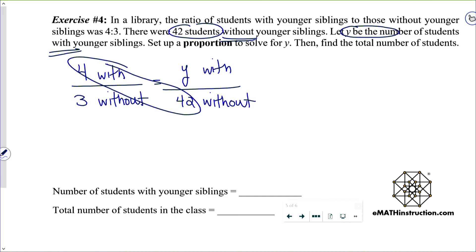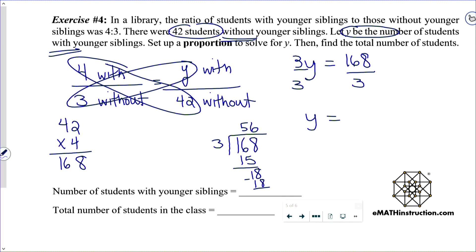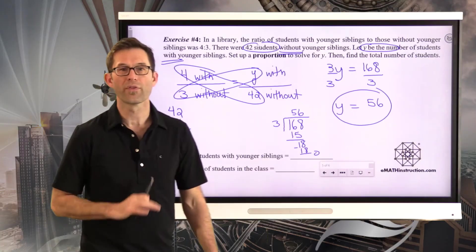So the 42 students that they tell us are without, and the thing that we want to find are the number of students with younger siblings. So what we've got is we've got that 4 to 3, which is really the with to without. Now, we want to keep the Y in the numerator, because we're trying to solve for the number of students with. And we know that there are 42 without. In order to solve this, I'm just going to do a little cross multiplication. 3 times Y is 3Y. And then we've got 42 times 4, which is 168.